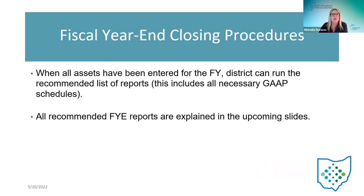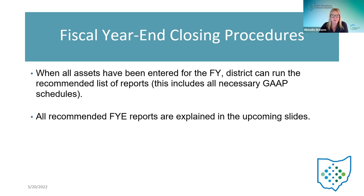Those are the pre-closing steps. If you look at the fiscal year-end checklist in the wiki, we've added pre-closing steps to emulate what's in the payroll and USAS checklists. Now we're to the point where we're ready to close for the fiscal year in inventory — making sure all assets have been entered and then running the recommended reports. This is where we'll get into detail on what reports are available and what's still in development for fiscal year-end.